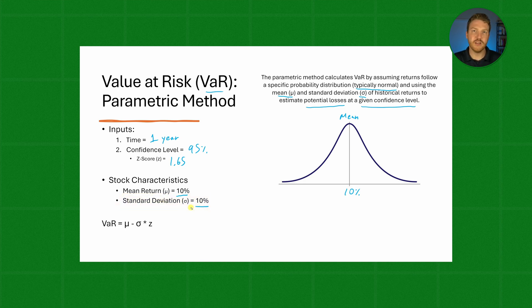Now we can calculate the Value at Risk using this formula. VaR equals the mean expected return of 10% minus the standard deviation of 10% multiplied by the Z-score of 1.65.